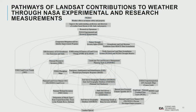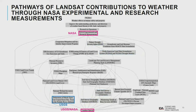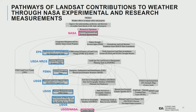Here's another example: we looked at Landsat and found it feeds into NASA experimental and research measurements. One pathway is through state soil surveys, which go into a drought monitor by NASA, which goes into a drought severity index by NCAR, and then into NASA research. Another pathway is through wetland inventories, which go into land cover databases, which go into floodplain maps, and then on up.